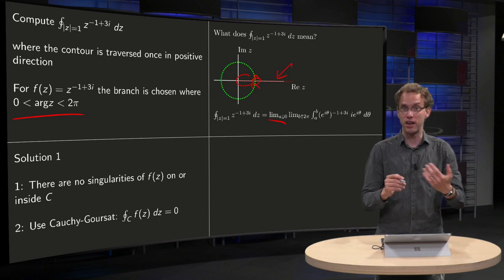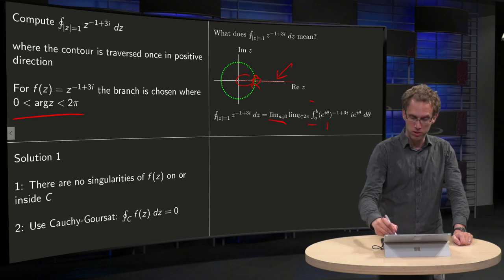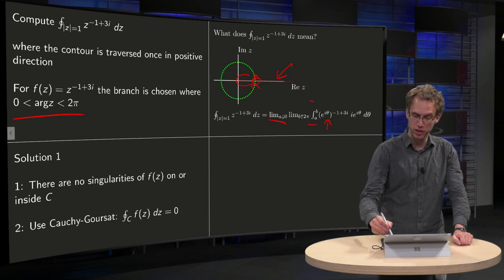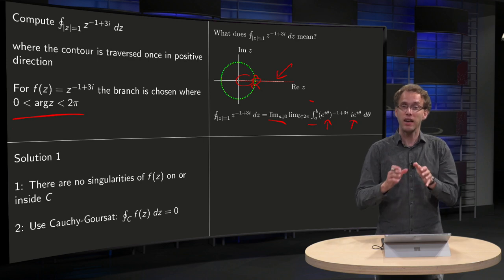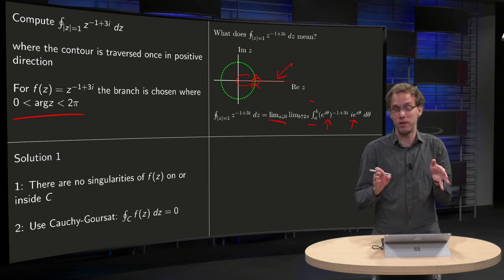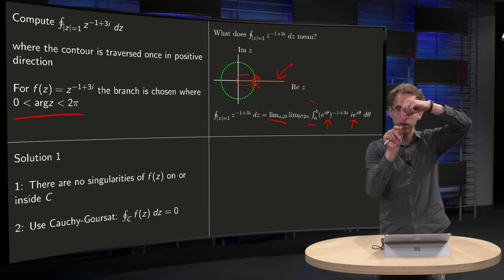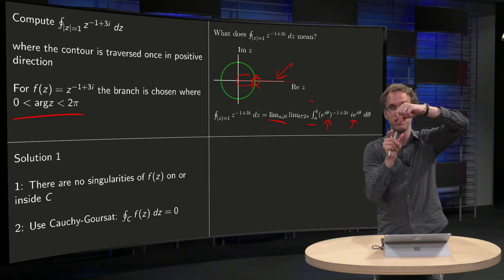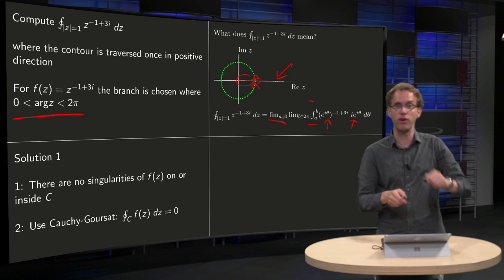You parameterize z equals e to the power iθ of course, you integrate from A to B. You substitute e to the power iθ in the function and dz becomes i times e to the power iθ dθ. And now your integral is okay in terms of θ, because your boundaries are going from slightly above 0 to slightly below 2π, like this, just avoiding your branch cut.